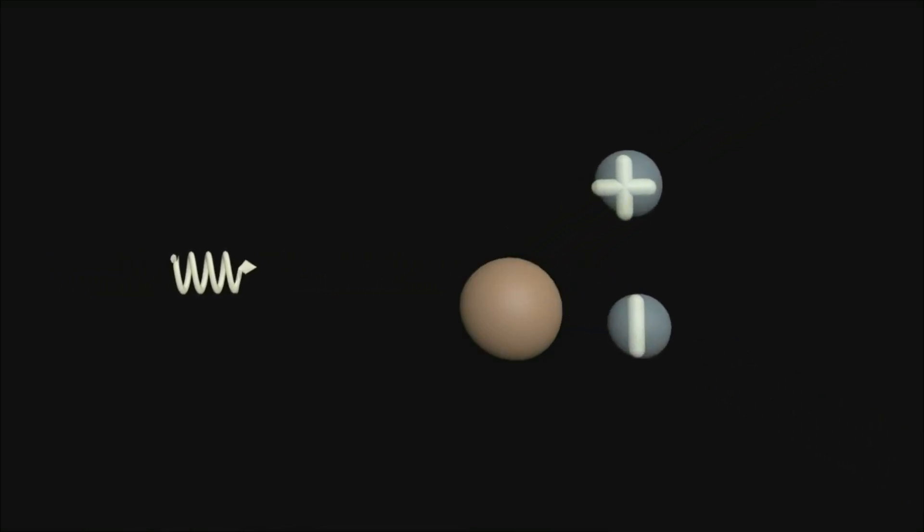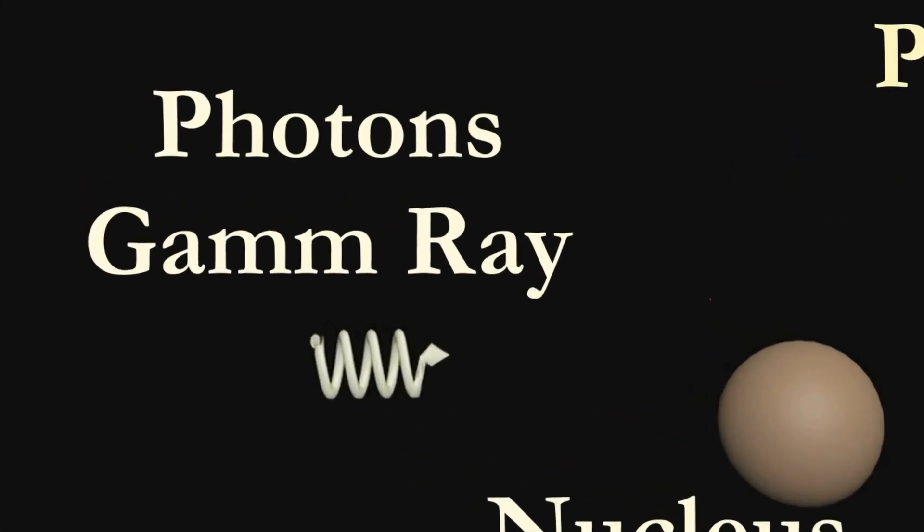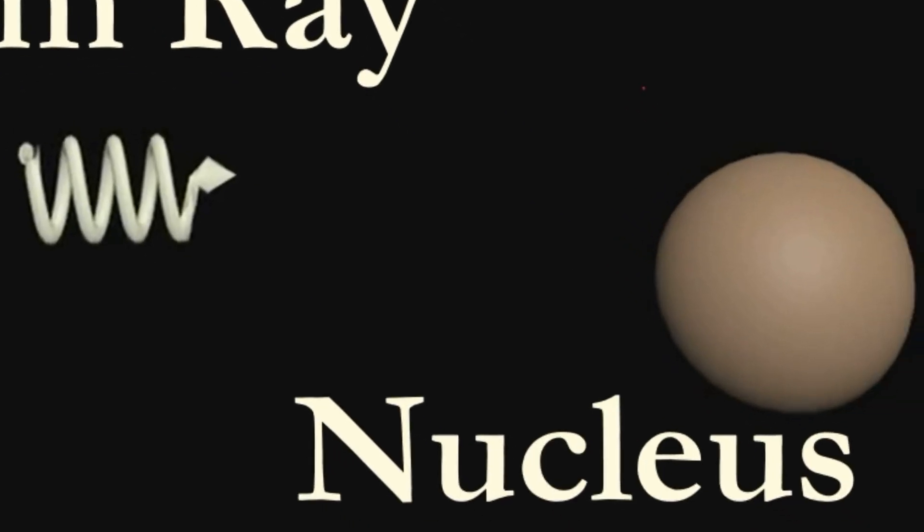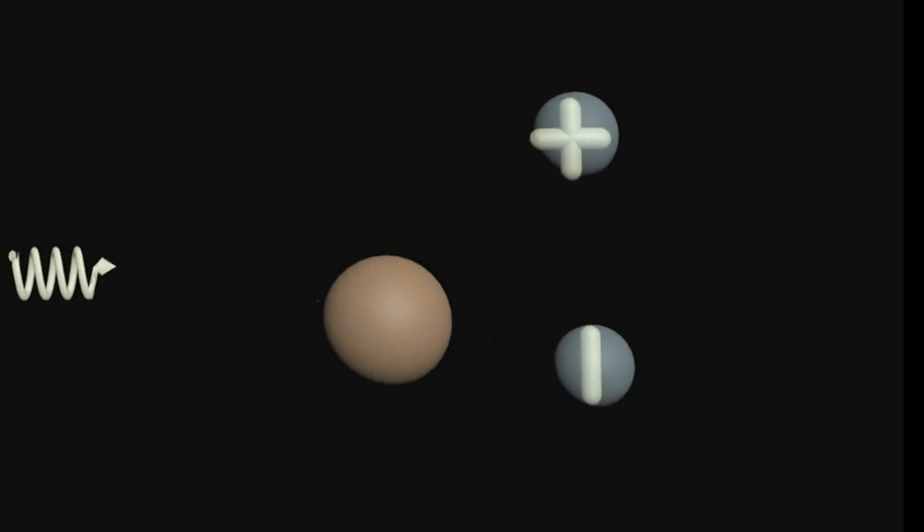When a photon or gamma ray having energy greater than 1.02 electron volt passes near a nucleus, it is converted into an electron and positron.